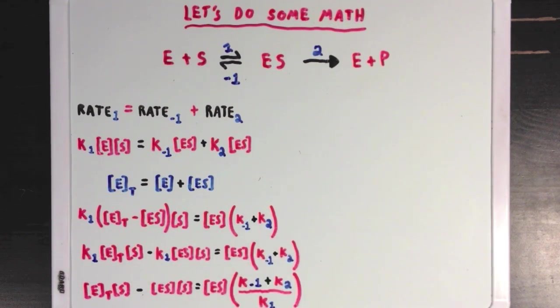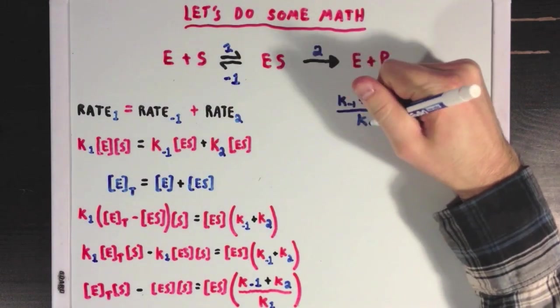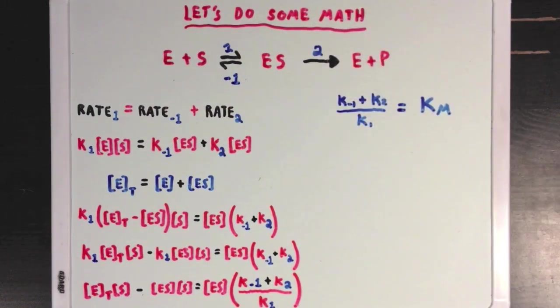Now, since all these rate constants are constant values, I'm going to combine them in this expression of K minus 1 plus K2 over K1 into a new term Km, which I'm going to talk a little bit more about later.